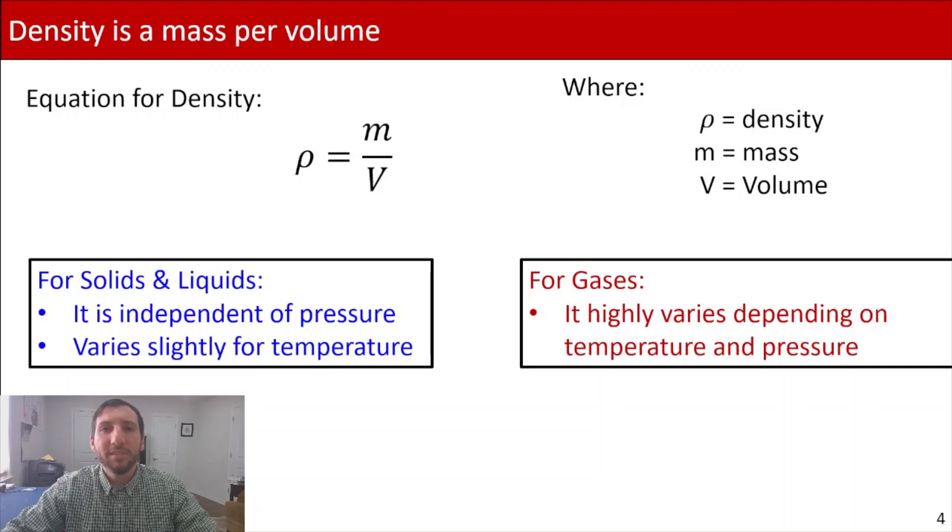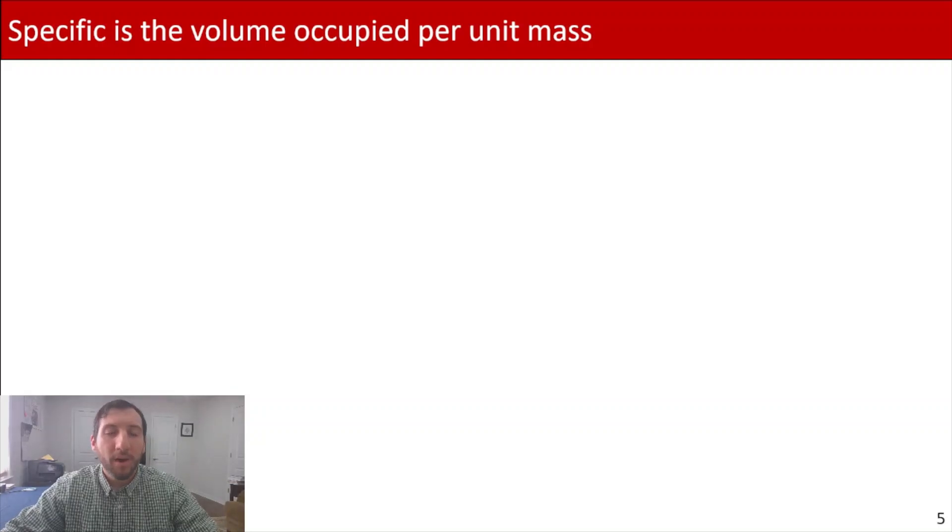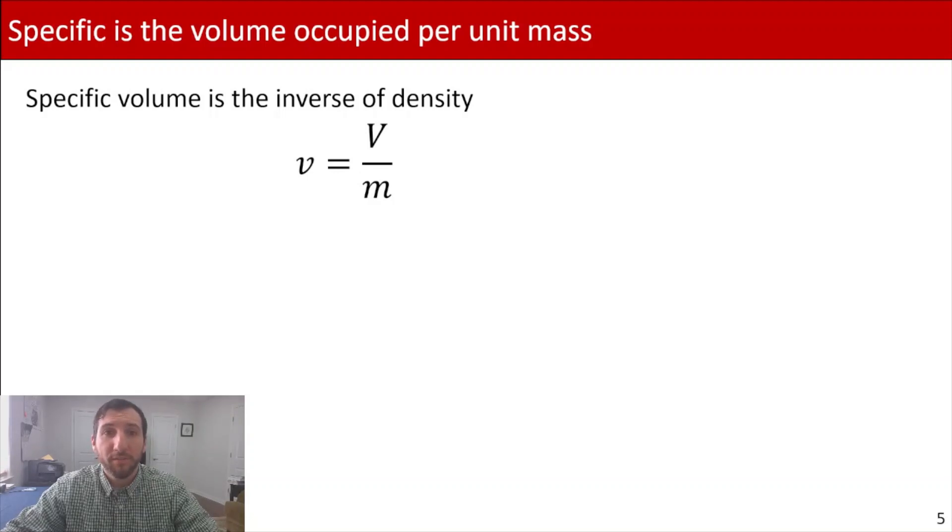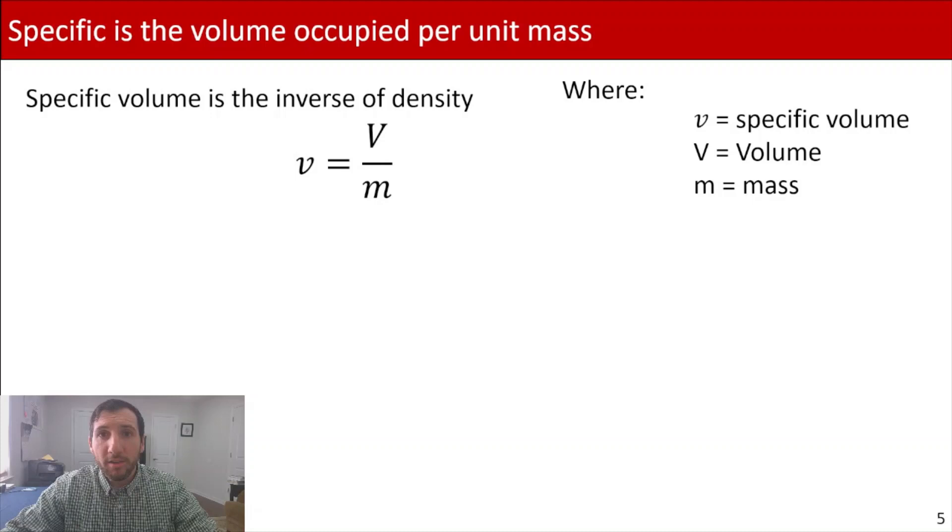So related to density is another process variable, which is called specific volume. Now, specific volume is the volume occupied per unit mass. It's the inverse of density. And the way that we describe it using an equation is we have a cursive V, which is representing specific volume, equals our volume divided by mass. Now, you may be wondering, if I have density, why would I ever need to use specific volume? Well, there are some times where the numbers may be easier to work with as a specific volume rather than density. Additionally, when you get to the energy balances and you enter into thermodynamics, you're going to encounter specific volume for completing some of your calculations. And that's why I threw specific volume in so that you're familiar with that term.